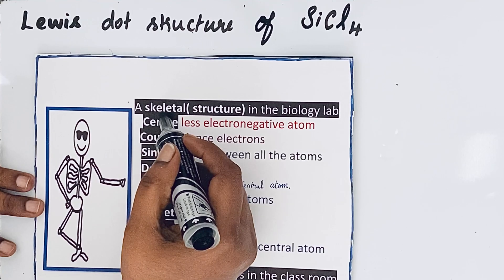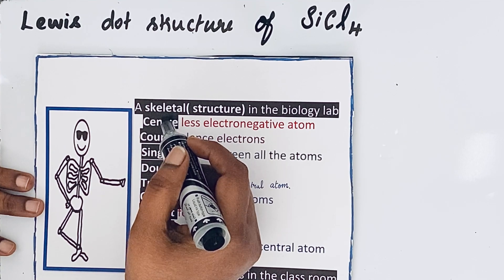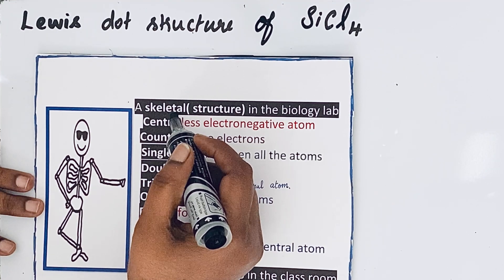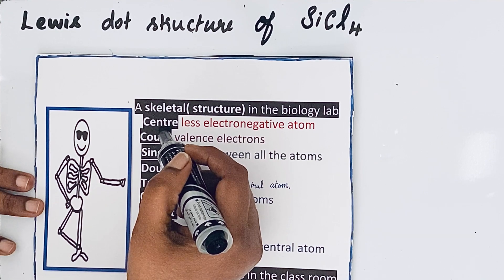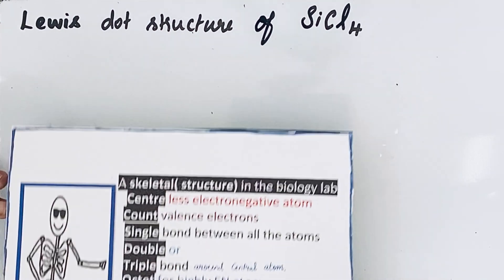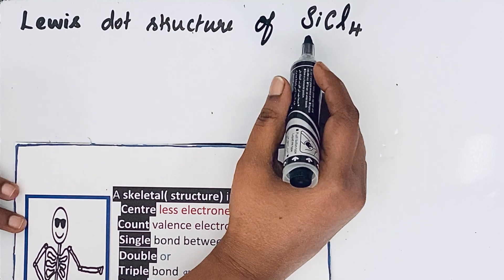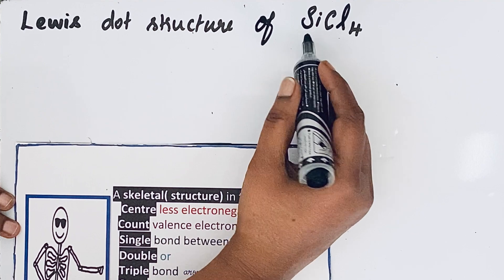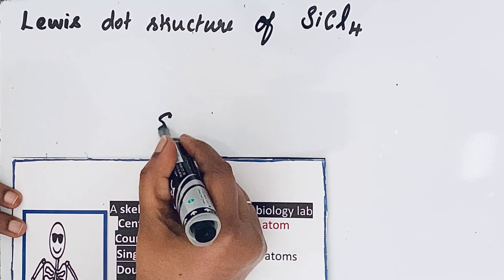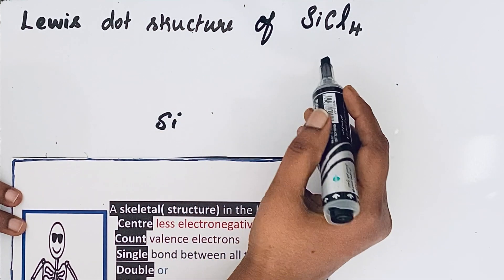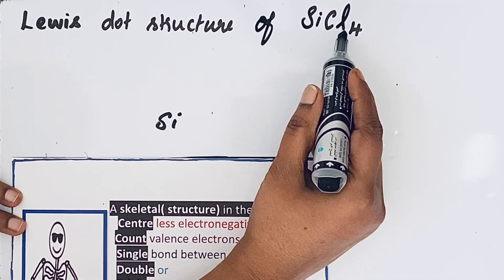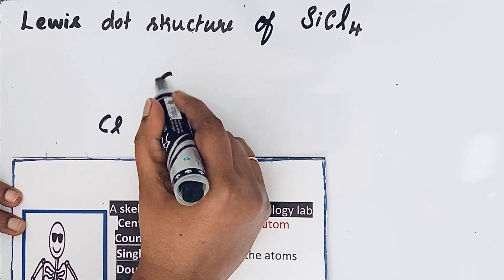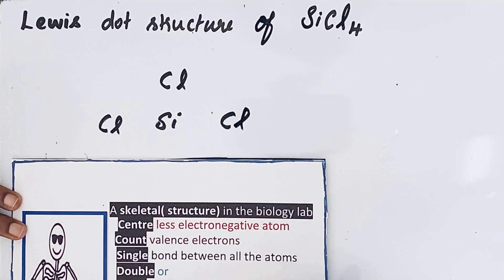So here, a skeletal structure in the biology lab. This is the first step. When you draw the skeletal structure, the center should be less electronegative atom. In silicon tetrachloride, silicon is less electronegative compared to chlorine, so we draw silicon in the center. Then the remaining chlorine atoms we can draw just around it. So chlorine here, another chlorine, and we have four chlorine atoms.